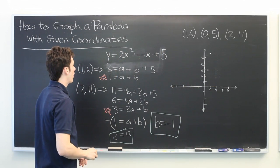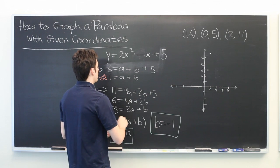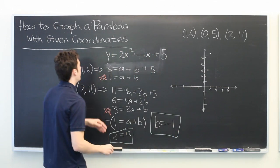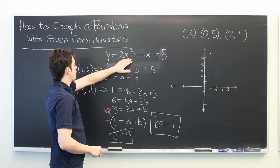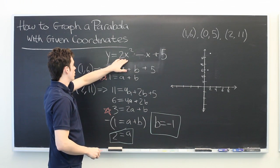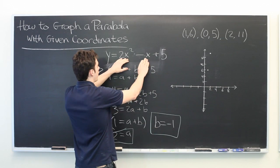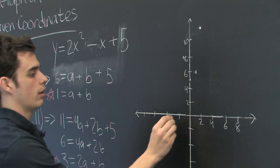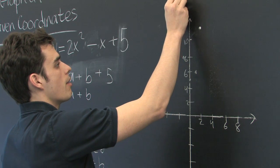Okay? So now let's do negative 2. Negative 2 squared is 4. Times 2 is 8. Minus negative 2 is 10. Plus 5 is 15, which would be way above our graph up here.